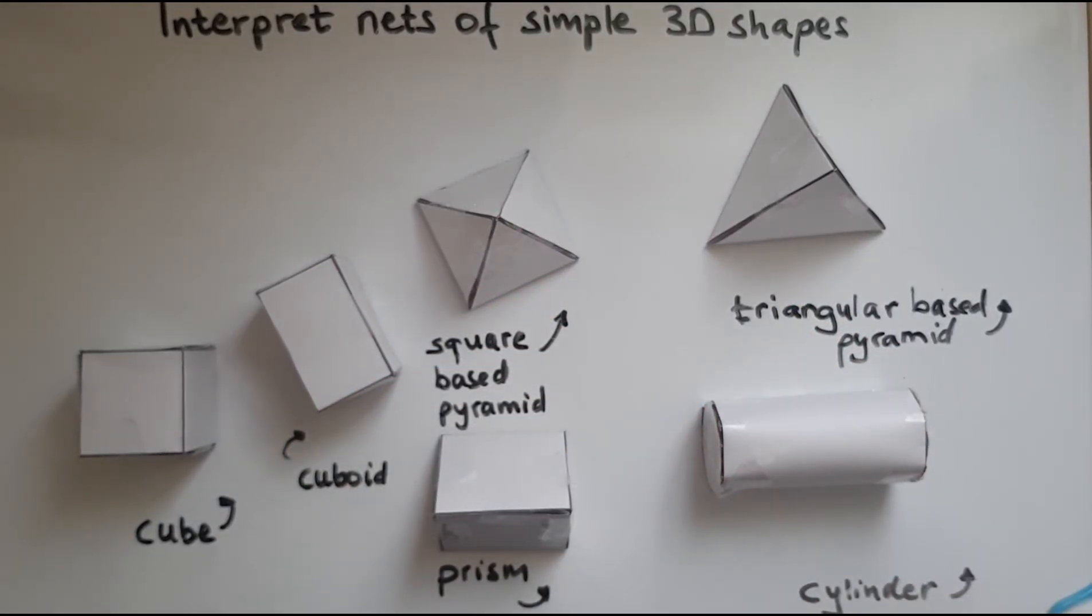You can practice this yourself by printing out some nets of these shapes, cutting them out, and then sticking together. Or maybe unfolding boxes or packaging of different items that you might have bought, like cereal boxes, for example.